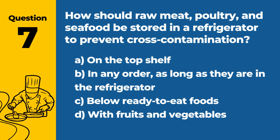Question 7. How should raw meat, poultry, and seafood be stored in a refrigerator to prevent cross-contamination? The answer is C: Below ready-to-eat foods. This prevents juices from contaminating other foods.